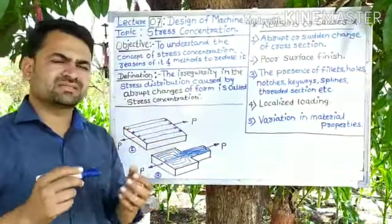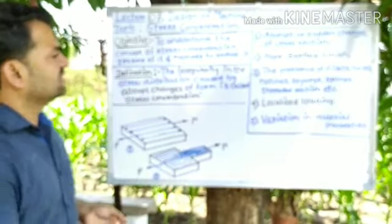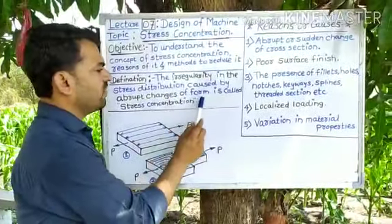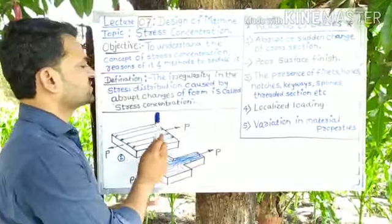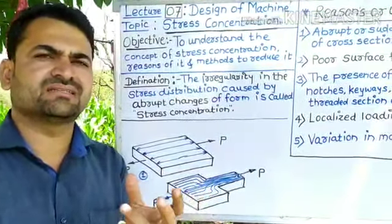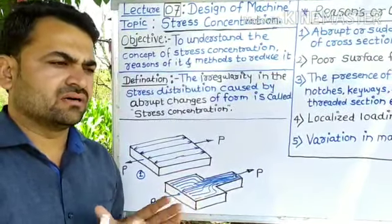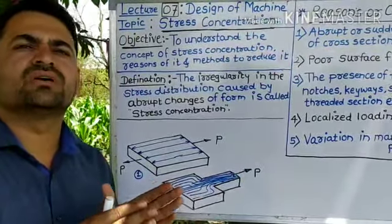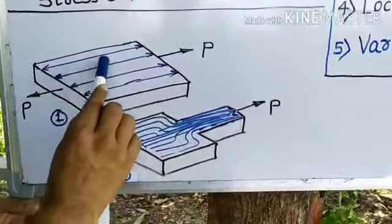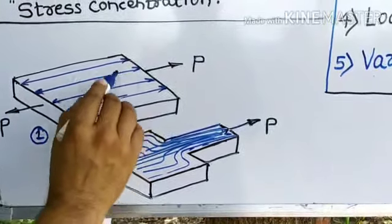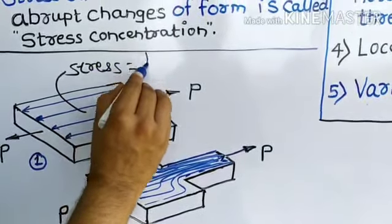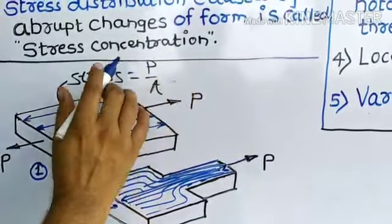What do we mean by stress concentration? The definition is: the irregularities in the stress distribution caused by abrupt change of form — form means shape — is called stress concentration. Whenever a component changes its shape abruptly, a normal stress distribution no longer holds good. When a component is subjected to loading, stress will be distributed over the section. Stress is equal to force per unit area, so this is the value of stress.